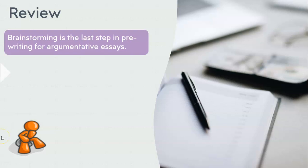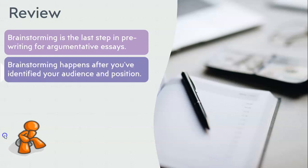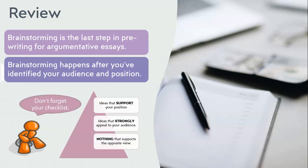Let's move on to a review. Brainstorming is the last step in pre-writing for an argumentative essay. You are generating ideas for your topic, but in this case your topic is your position. Brainstorming happens after you've identified your audience and position. And don't forget your checklist: generate ideas that support your position, ideas that strongly appeal to your audience, and make sure there's nothing on there that supports the opposite view. You guys are going to have a chance to be turned loose and do this for this week's writing prompt. I've been Mr. Remedy — you guys have been amazing, and we will see you next time.